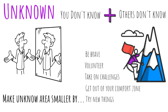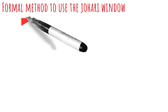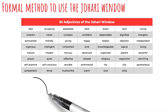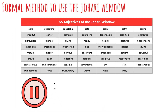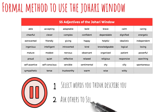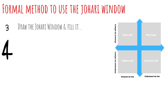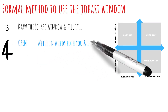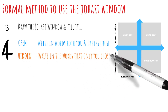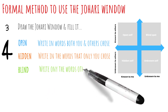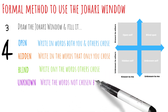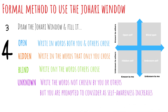You can end your use of the Johari window here with these informal techniques, or you can use the following technique for a more systematic approach. Look at the list of characteristics below and select the words that you think best describe you. Then ask colleagues — if doing this for your work self — or friends and family — if doing it for your personal self — to select the words they feel best describe you. Draw the Johari diagram and fill in the quadrants: Open — words chosen by both you and others; Hidden — words chosen only by you; Blind — words chosen only by others; Unknown — words not chosen by anyone but that you are prompted to consider as your self-awareness increases.